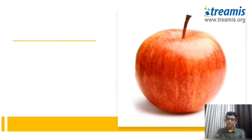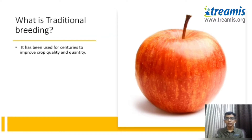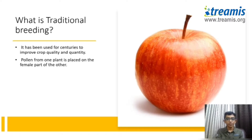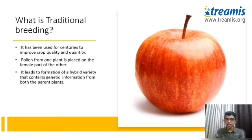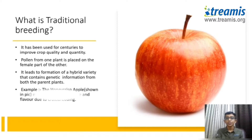What is traditional breeding? It has been used for centuries to improve the crop's quality and yield. The pollen from the male part of one plant is placed on the female part of another, leading to the formation of a hybrid variety that contains genetic information from both parent plants. The honeycrisp apple, shown on screen, has extreme sweetness and crispness due to crossbreeding.